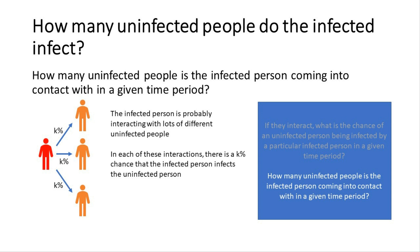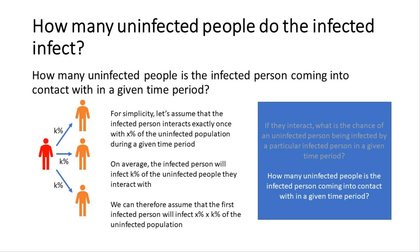Professor Tom Britton suggested imagining it like tossing a coin: when you interact, you're either going to infect or not infect — essentially tossing a coin with every member of the population you interact with. The chance you infect Alice is totally independent of whether you've infected Ben. Let's assume our infected person interacts exactly once with X% of the uninfected population during a given time period. On average, they will infect K% of those they interact with — so the first infected person infects X% times K% of the uninfected population.